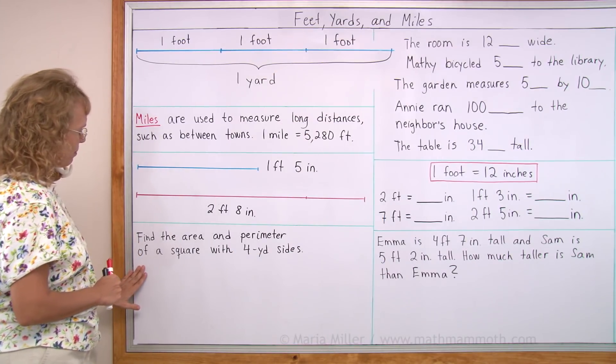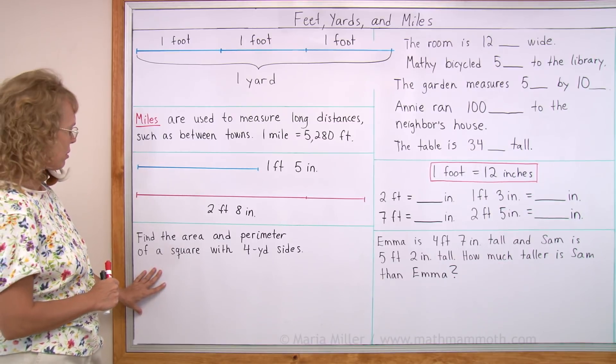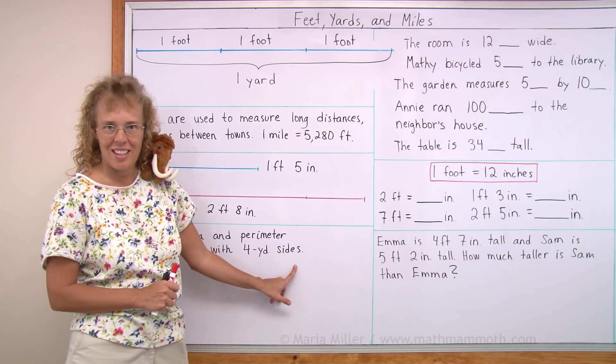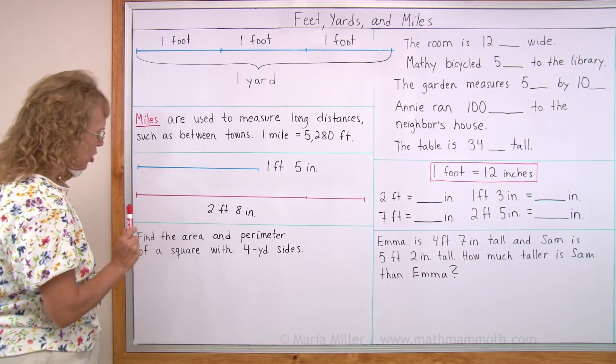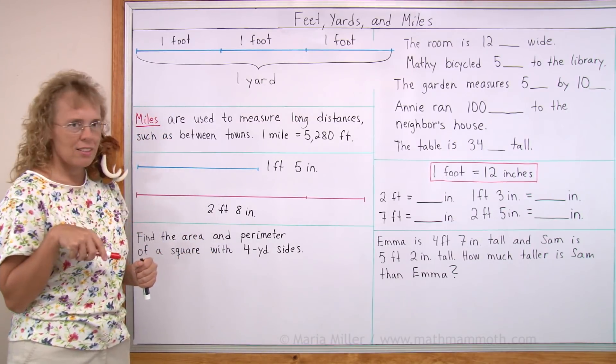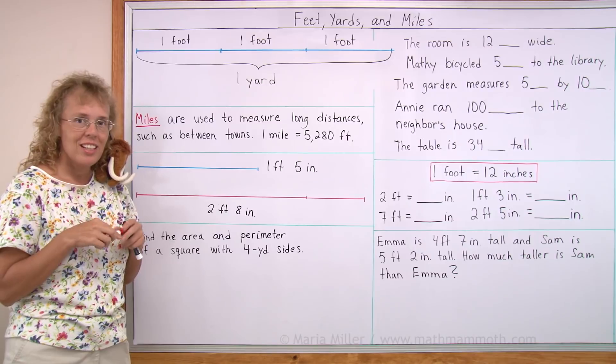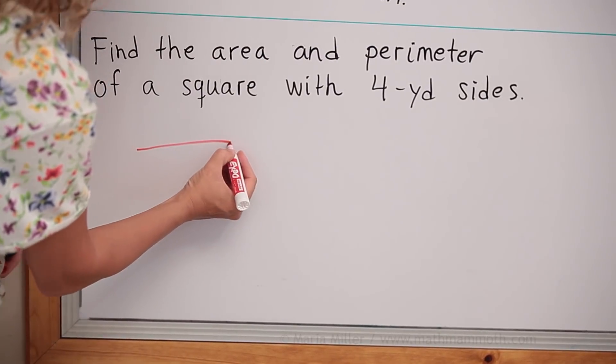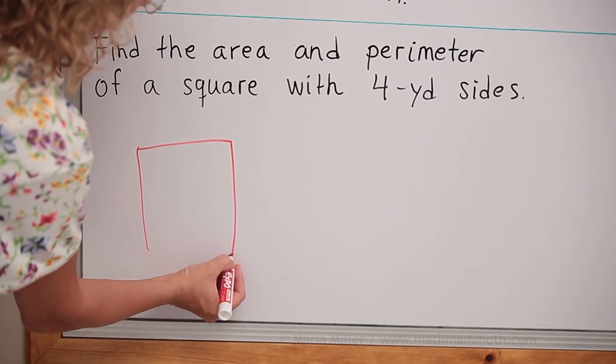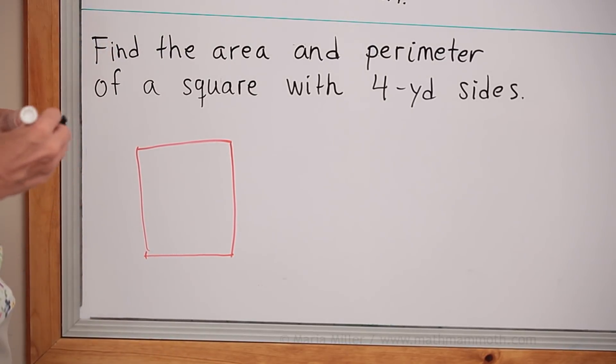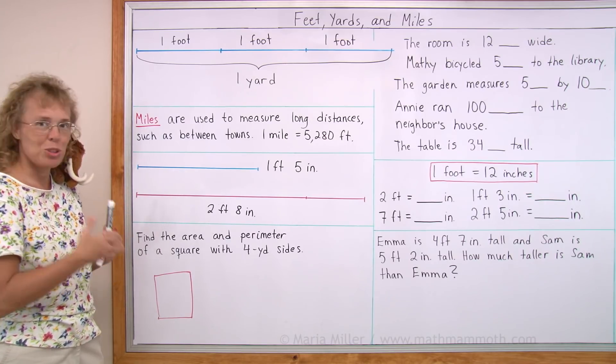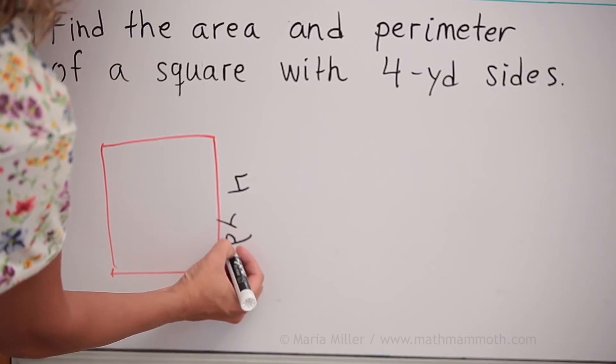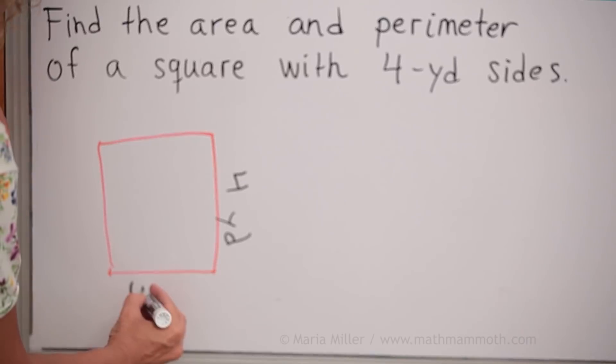Over here, we're going to find the area and perimeter of a square with four yard sides. It's a geometry problem talking about area and perimeter and a square. So draw a sketch, just a little picture, kind of help you think. Some kind of a square, a little floppy, but it doesn't matter. It helps you think. Then you can mark on it what you know. Four yards and this side is four yards.